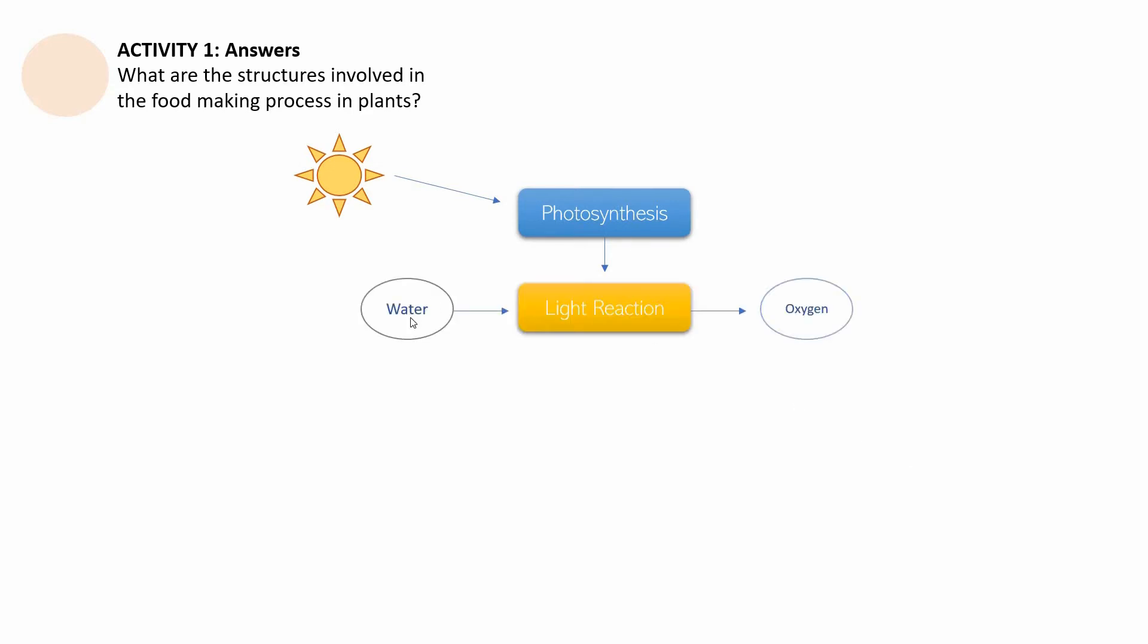Photosynthesis, and then this oval must have the word water. This oval must have the word oxygen. And the two boxes right here are NADPH and ATP. Carbon dioxide must be put in this oval, pointing to Calvin cycle. And Calvin cycle points to this oval for sugar.